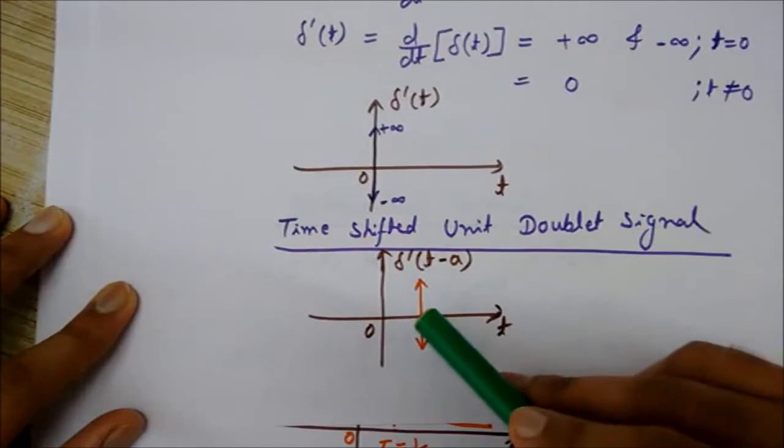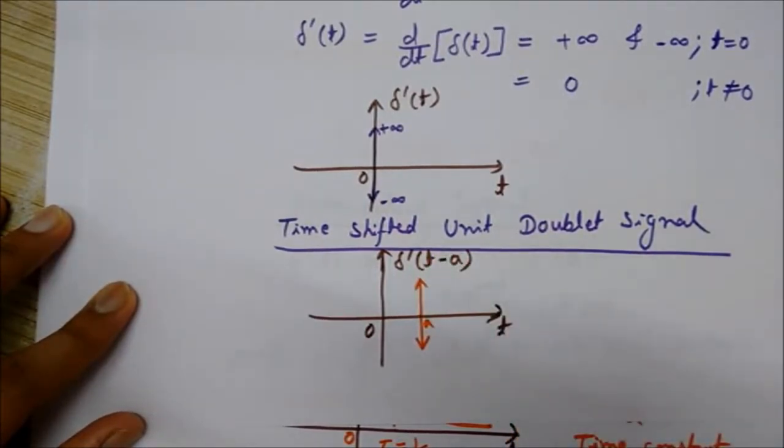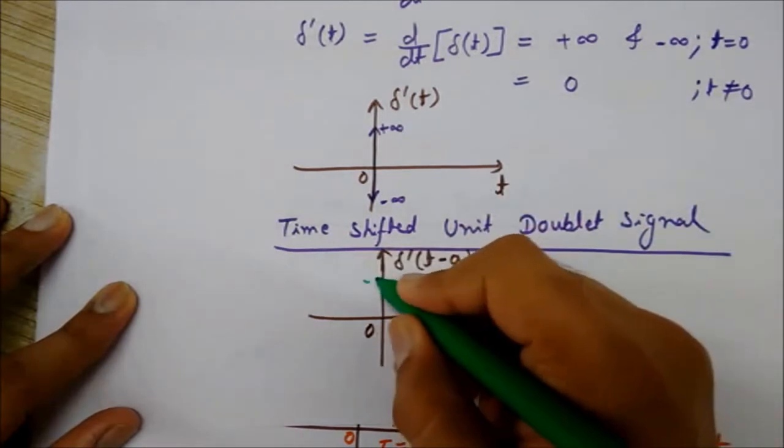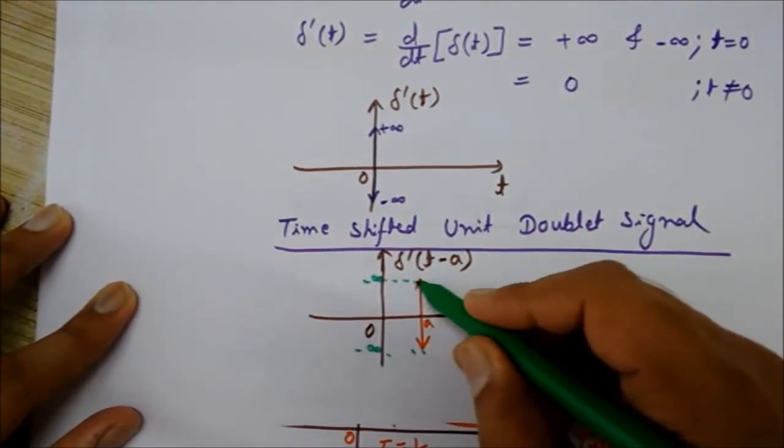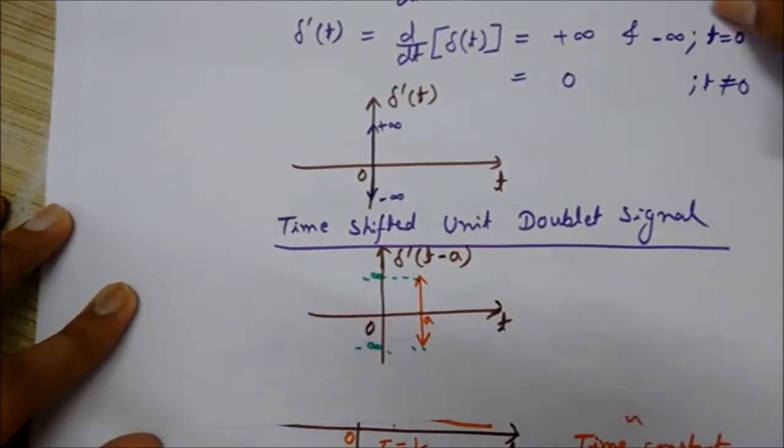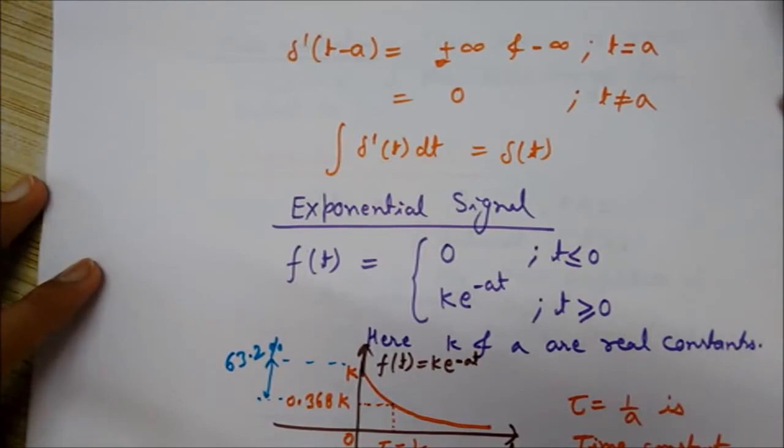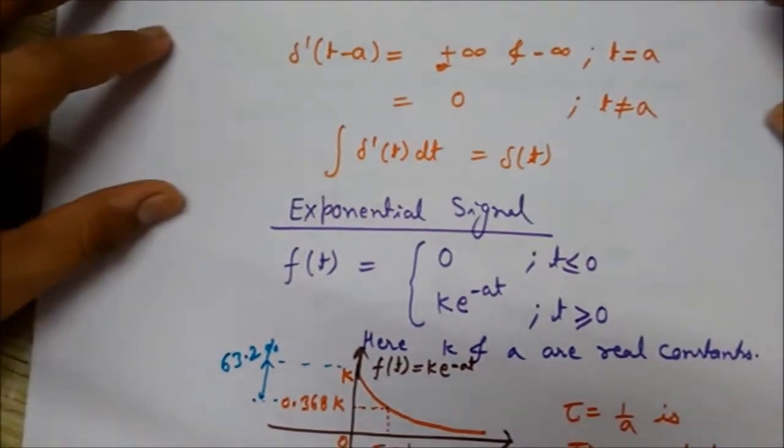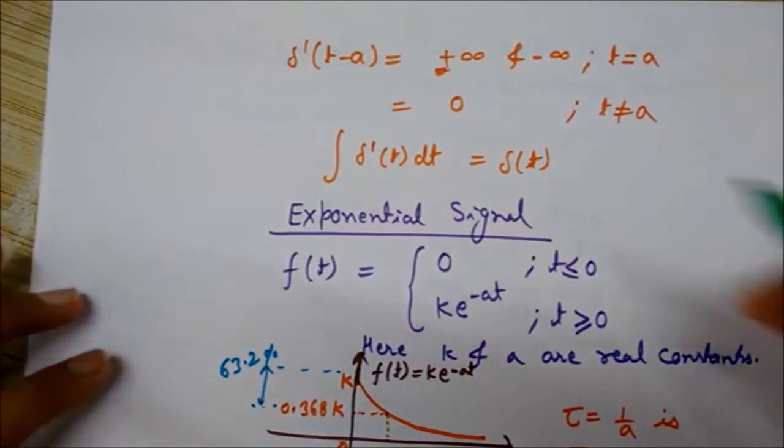At t equals a, it has values of plus infinity and minus infinity. But for t not equal to a, it is zero.